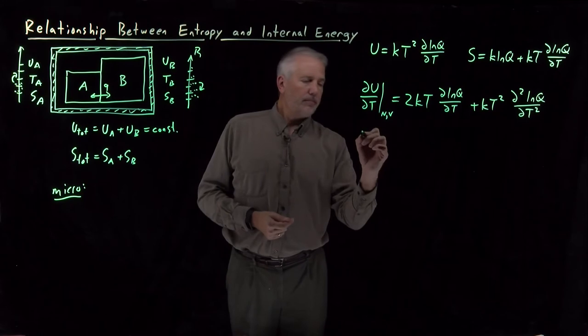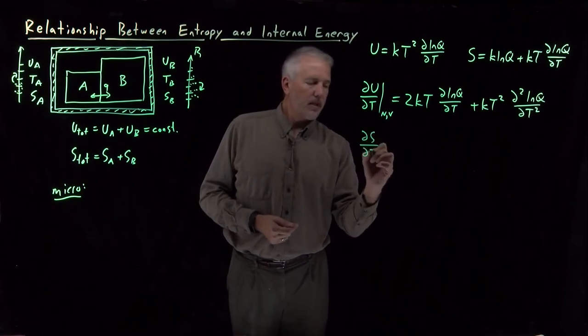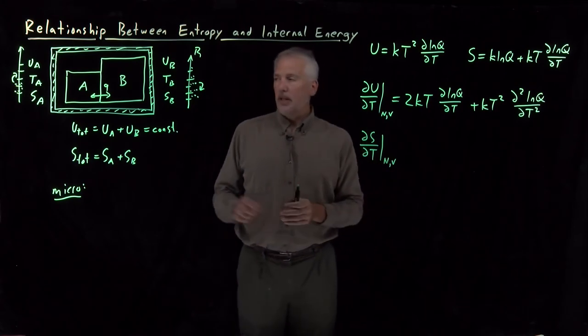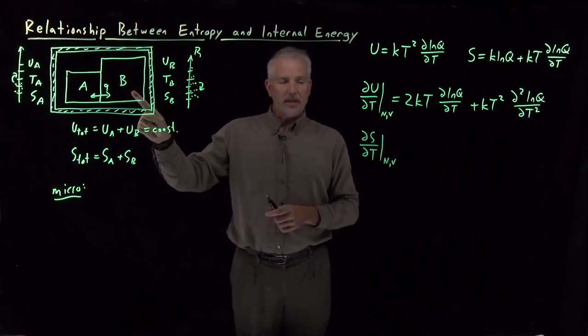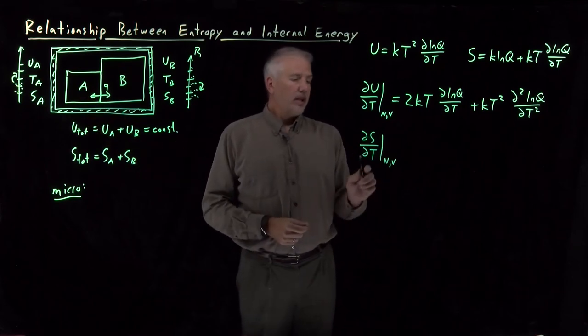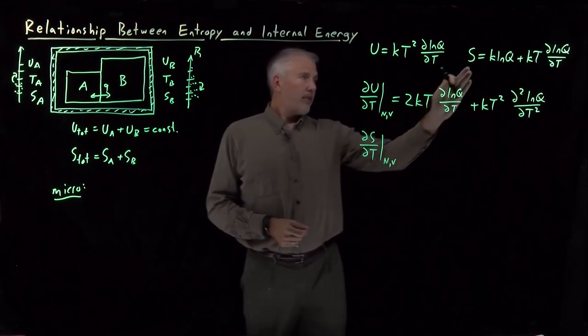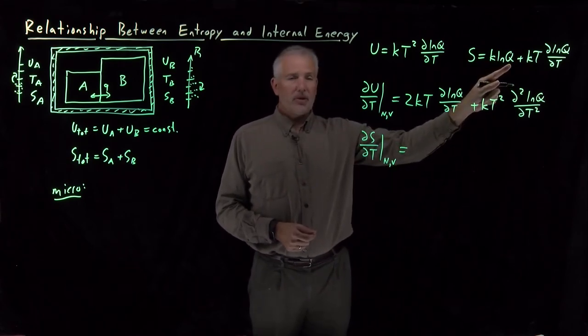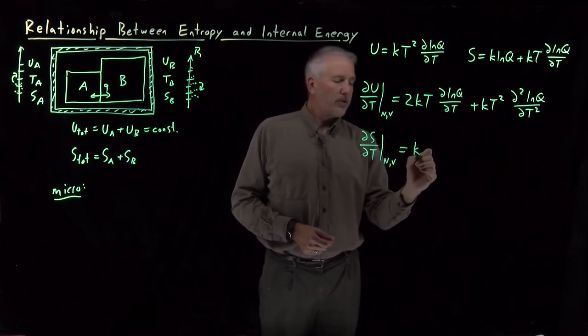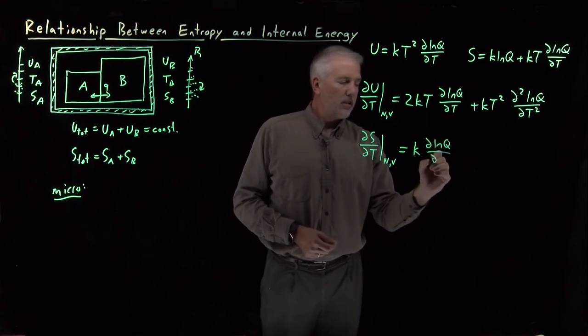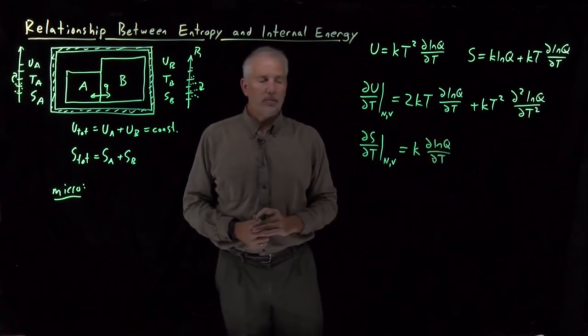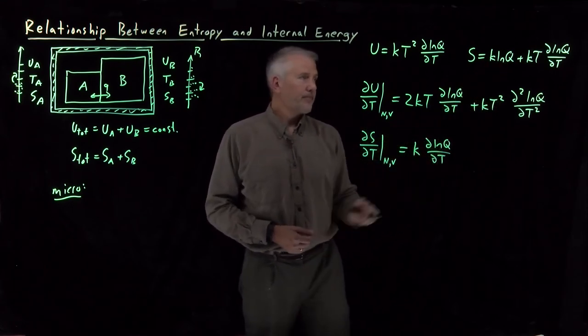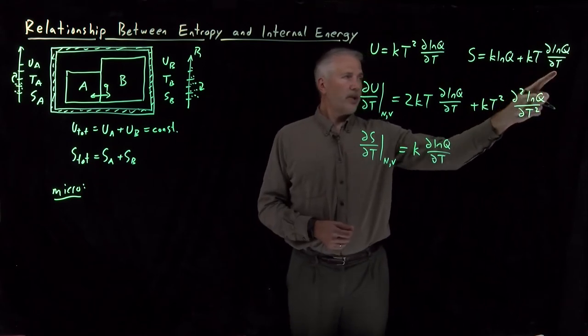We can do the same thing for the entropy. If I ask, how is the entropy of block B changing as I change its temperature, or how is the entropy of block A changing? dS dT, again just taking the derivative of this expression. Q has some temperature dependence hiding in it most likely, so I need to include the possibility that q depends on temperature. So, temperature derivative of k log q gives me k d log q dT. This second term, again, I need the chain rule.